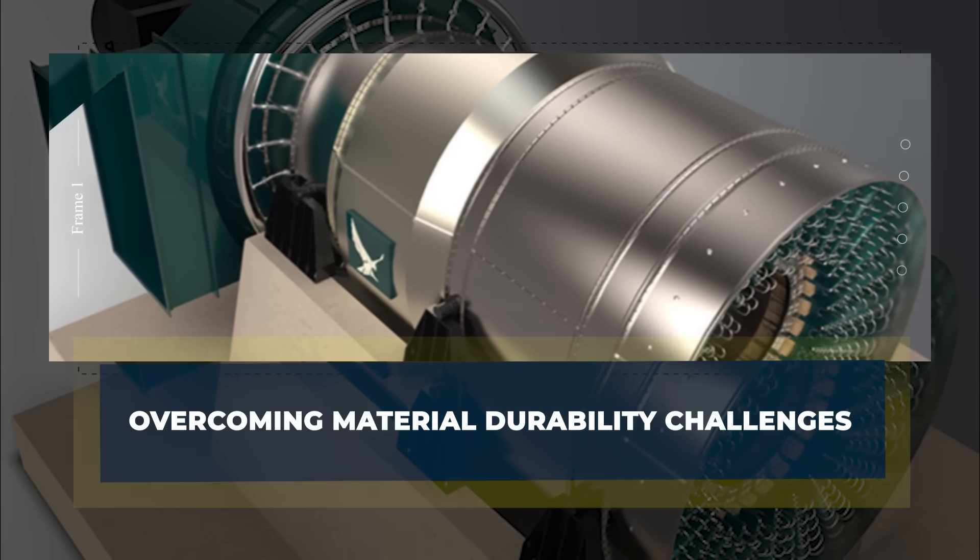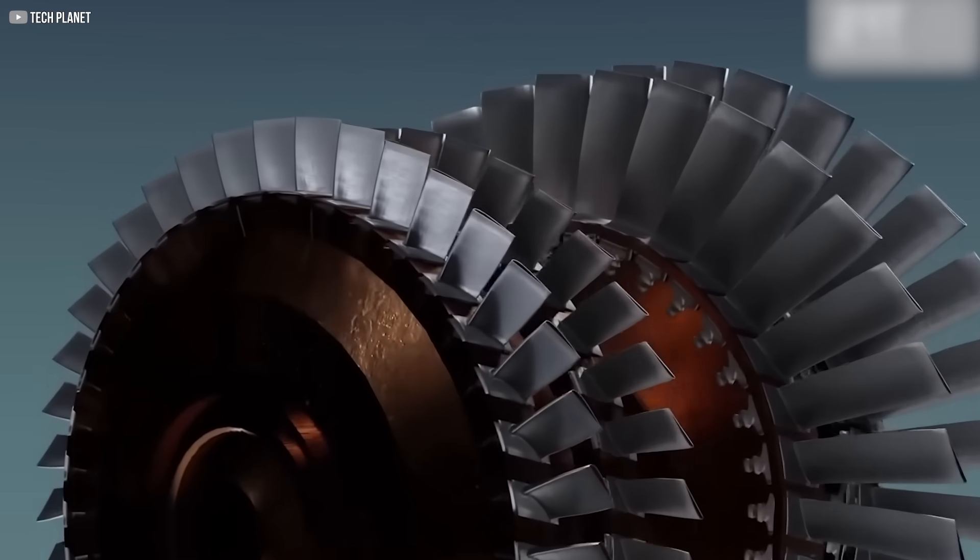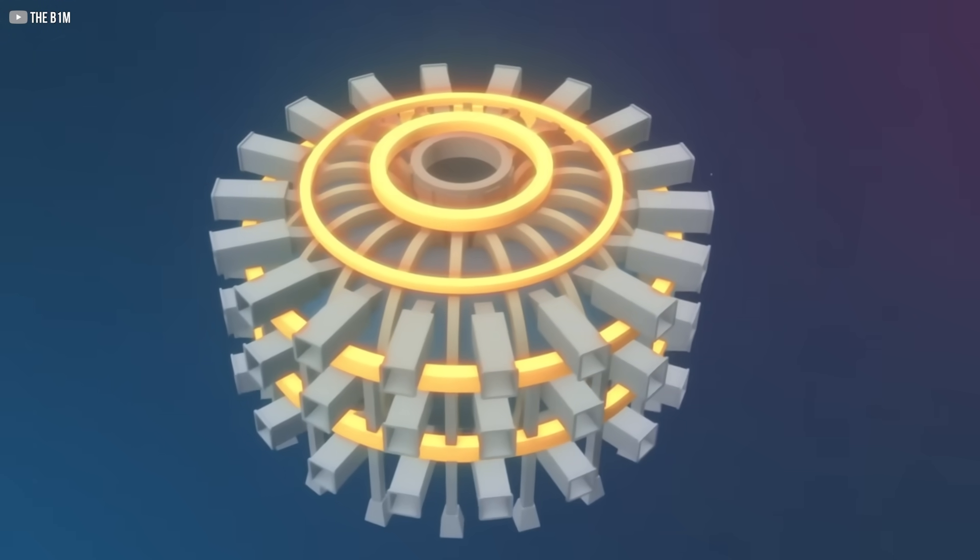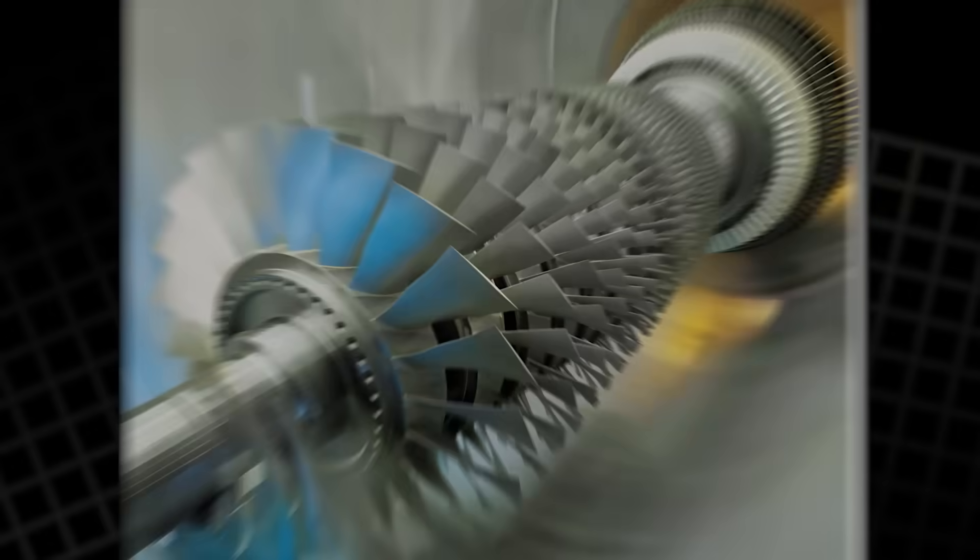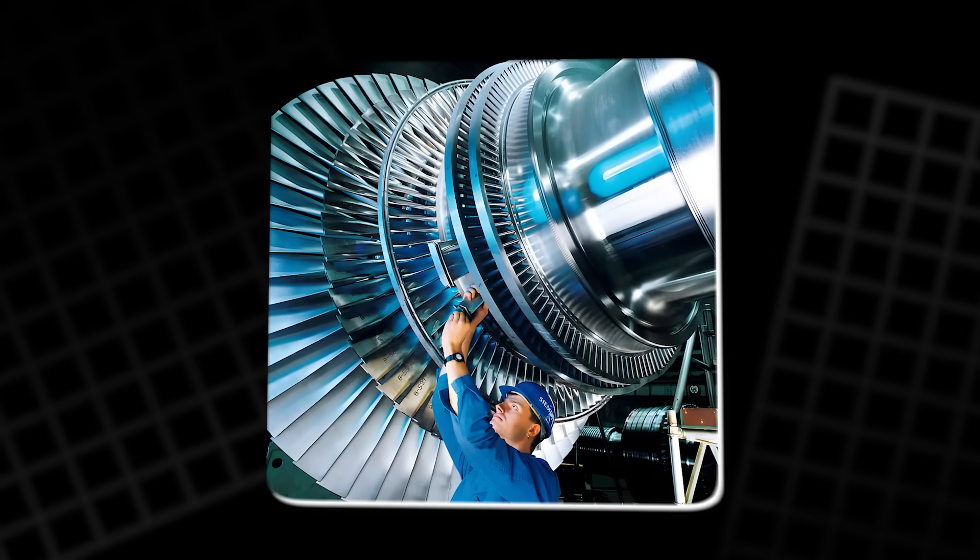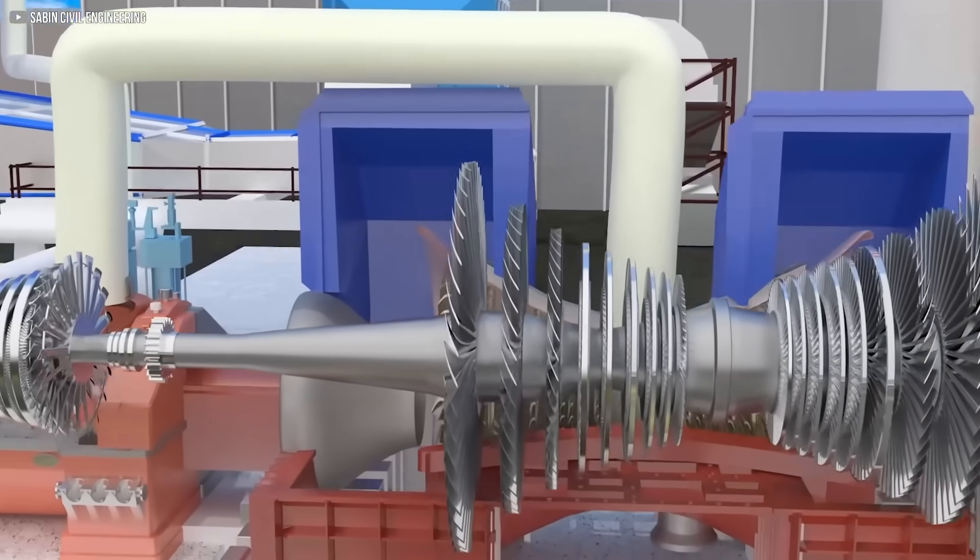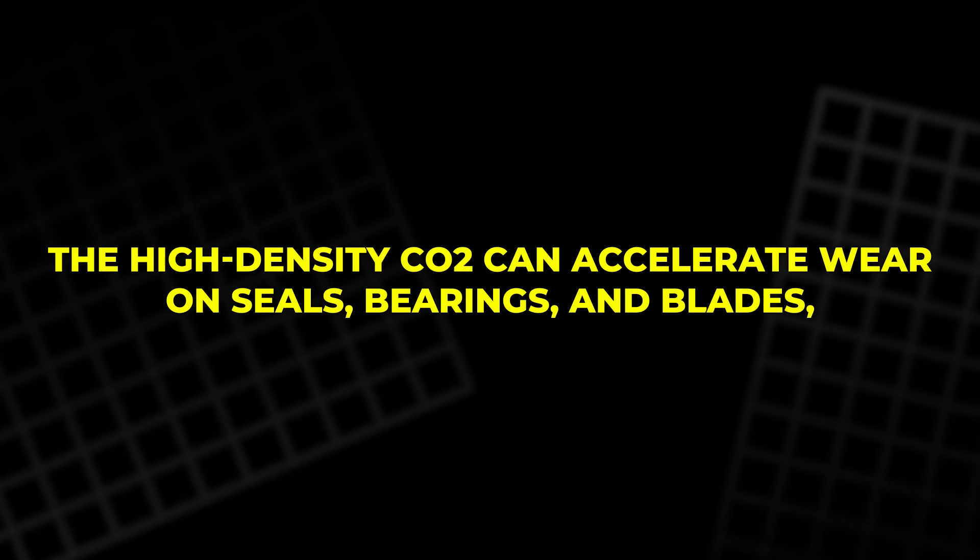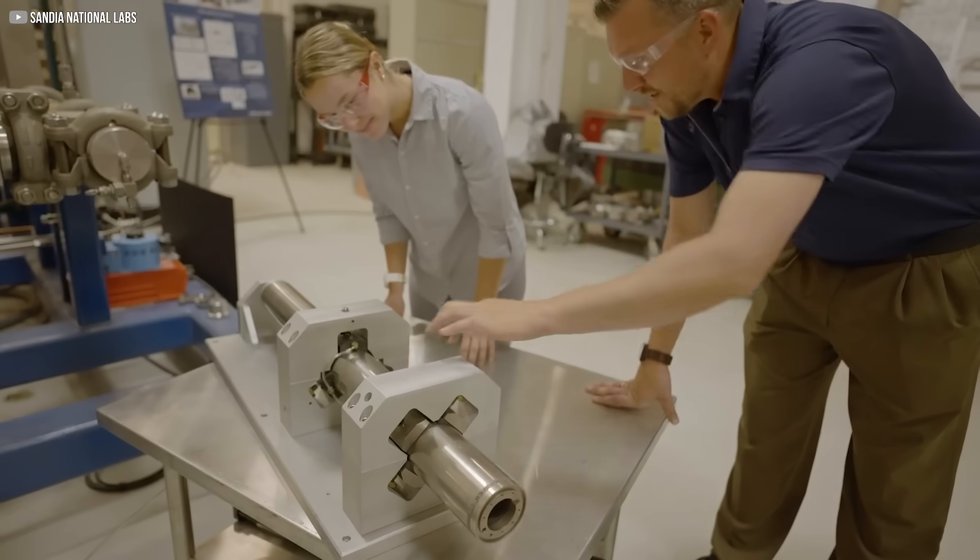Overcoming Material Durability Challenges. Despite the promising efficiency gains, supercritical CO2 turbines do face significant challenges, particularly when it comes to material durability. The extreme temperatures and pressures required for supercritical CO2 systems put a great deal of stress on the components of the turbine. Traditional materials, which are used in steam turbines, often struggle to withstand the intense conditions inside a supercritical CO2 system. The high-density CO2 can accelerate wear on seals, bearings and blades, leading to potential failures if not properly engineered.